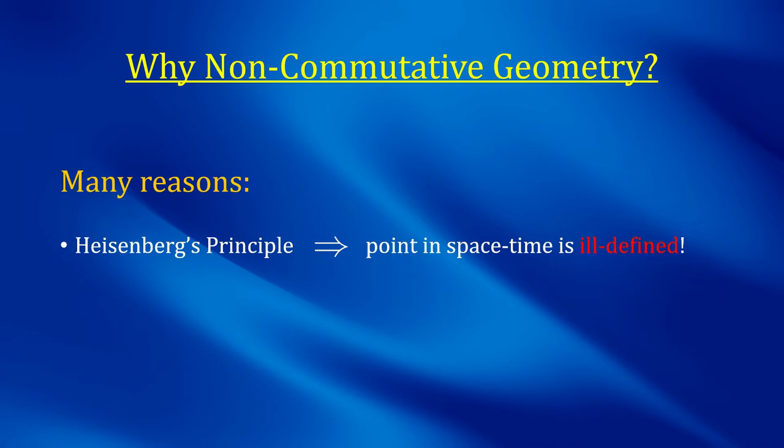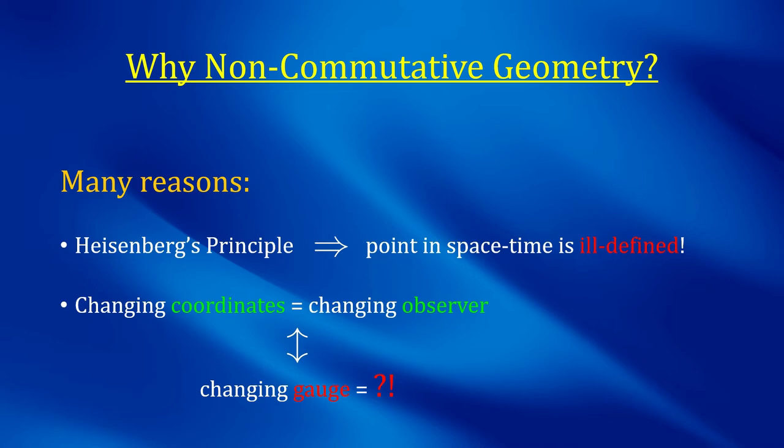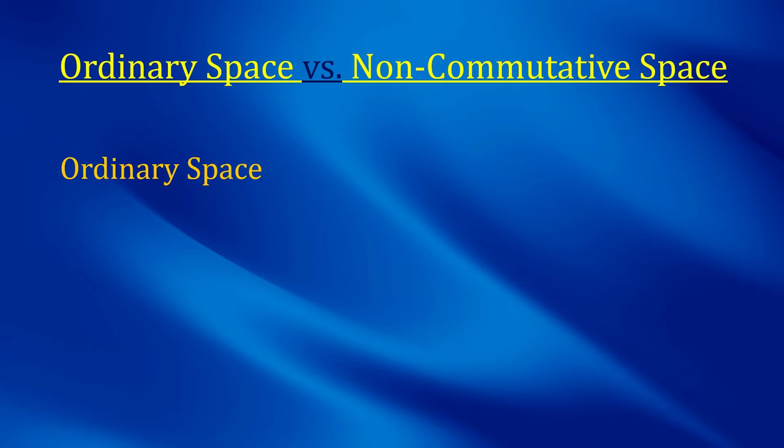General relativity can be seen as a gauge theory whose gauge transformations are the diffeomorphisms, which means coordinate transformations. Changing the coordinates means, roughly speaking, changing the observer. There is a physical meaning to those transformations. On the other hand, traditional gauge transformations are just a change in the conventions one uses to perform calculations. What is their physical meaning? I'll keep this question in suspense for a while, and now I'll tell you what non-commutative geometry is.